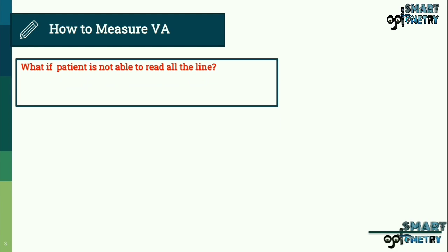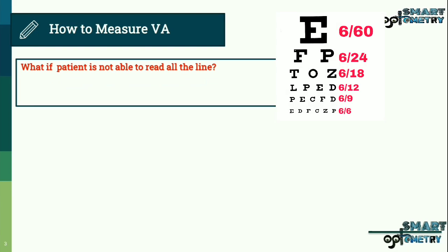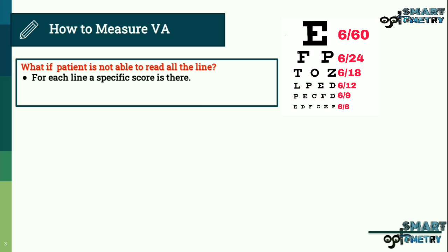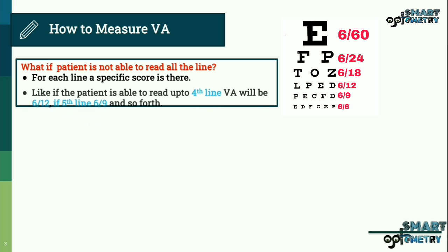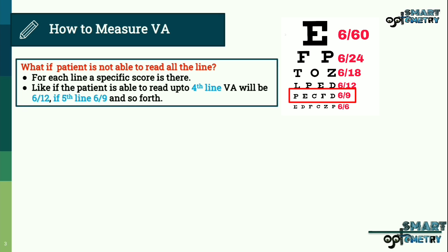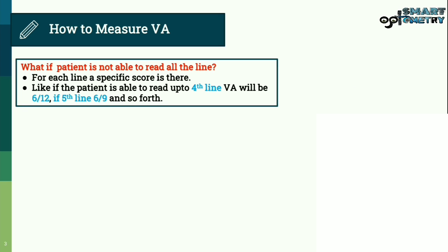If the patient is not able to read all the lines, the visual acuity chart has a specific score for each line. For example, if the patient is able to read up to the fourth line, visual acuity will be 6/12; if the fifth line, 6/9, and so forth.